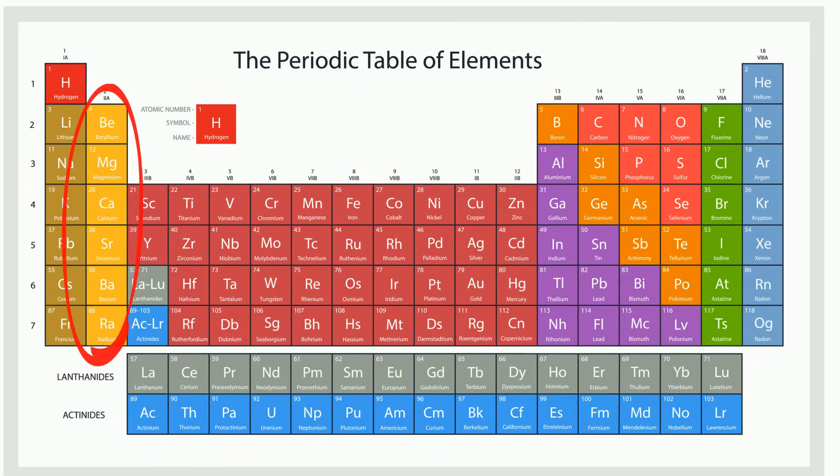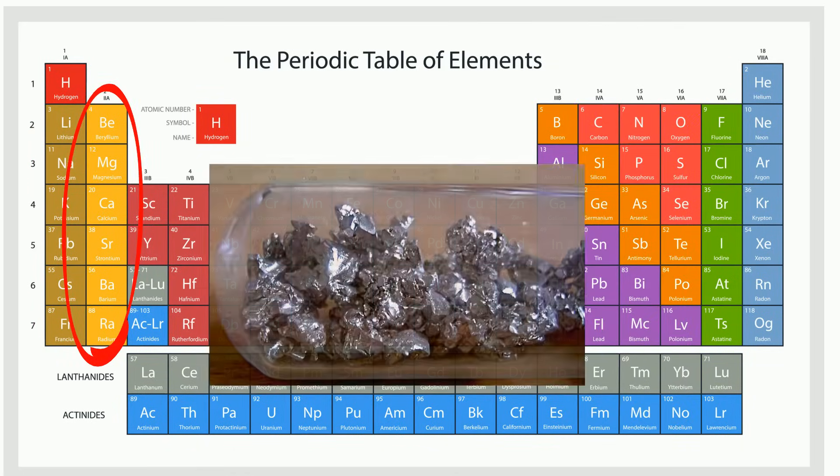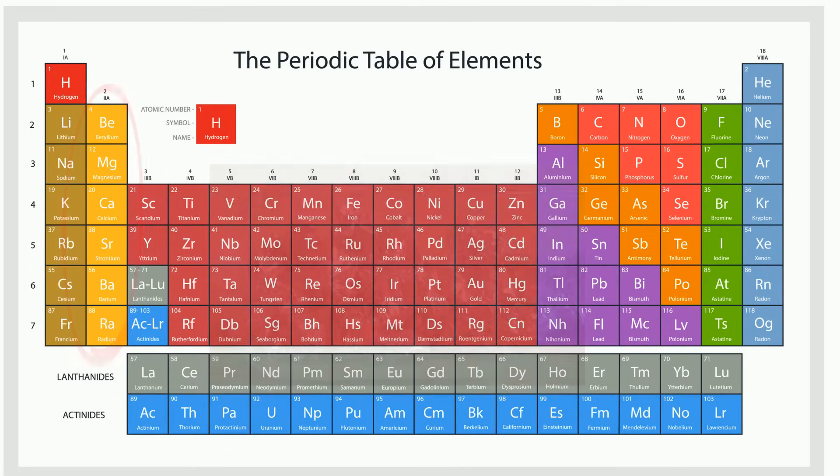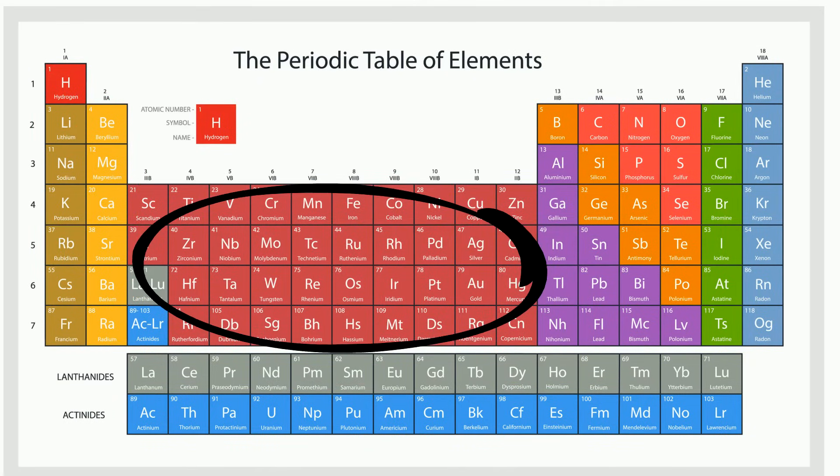The alkaline earth metals, group 2, are shiny, ductile, and malleable, and they combine with other elements. The transition metals, groups 3 through 12, are most familiar metals because they often occur in nature uncombined.